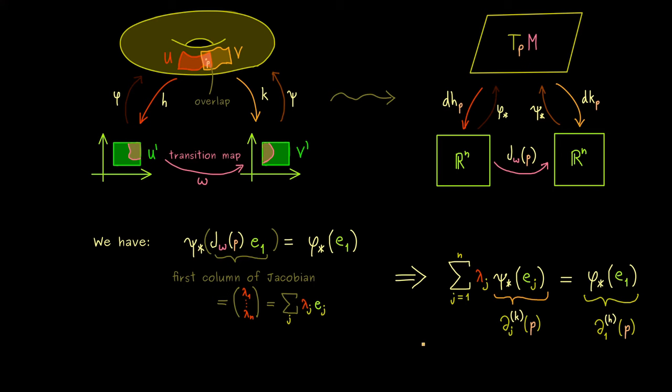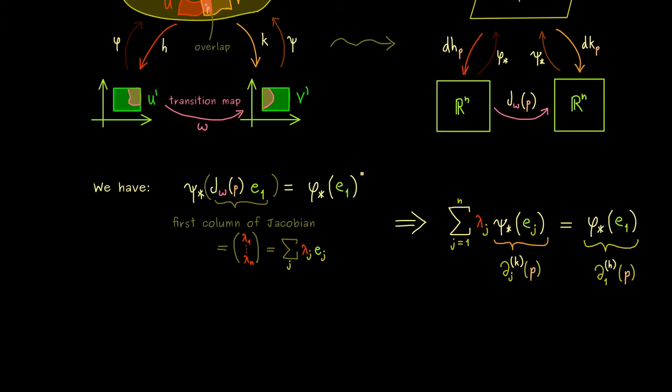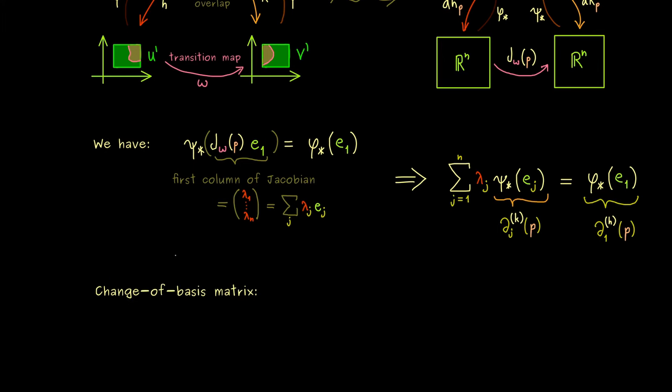Or to say it more concretely, now we know how the change of basis in T_p M works. And if you know some linear algebra, you also know, that this is usually described by the change of basis matrix. This means, if you have one basis b and another basis c, switching between these bases is given by a matrix. And in our case here, the two bases b and c are just defined by our two charts h and k.